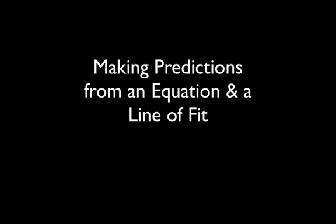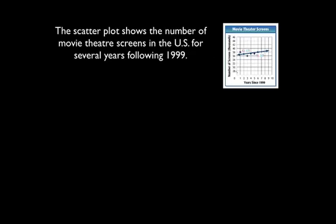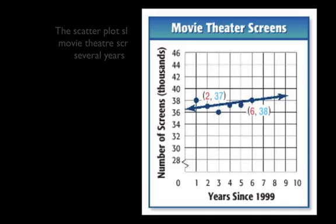Making predictions from an equation and a line of fit. The scatter plot shows the number of movie theater screens in the United States for several years following 1999. Let's take a look at that scatter plot.